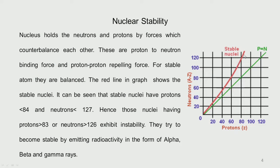The red line on the chart shows where all nuclei in nature exist, and it stops at about 84 protons with neutrons beyond 120. Beyond this, there are no stable nuclei available. Those unstable nuclei want to become stable, so they emit radioactivity in the form of alpha and beta, and then they become stable. The green line shows where N equals P — the number of neutrons equals the number of protons.